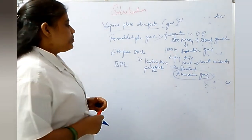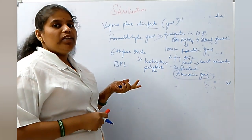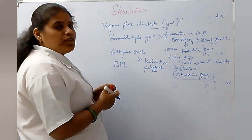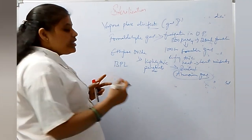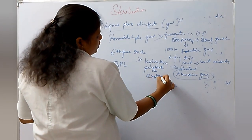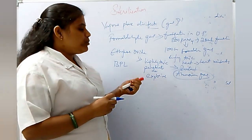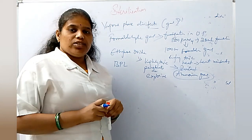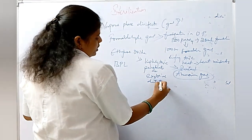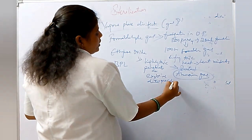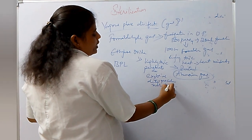Ethylene oxide is highly toxic and has deep penetrating power. It is not used for fumigation due to its explosive nature. Ethylene oxide is used for sterilization of flammable substances, dental procedures, and rubber materials.